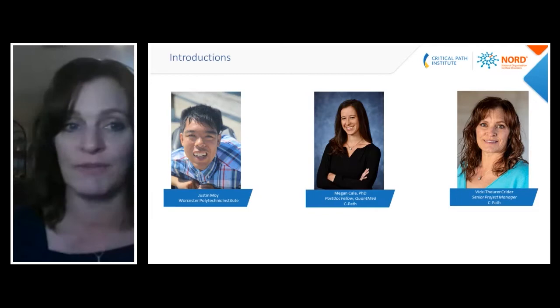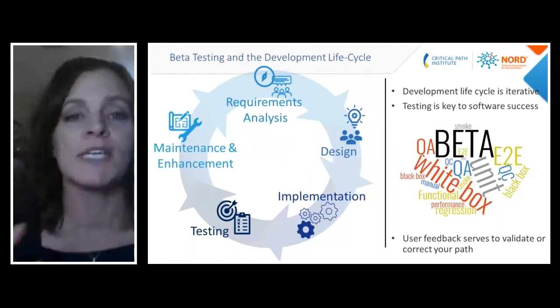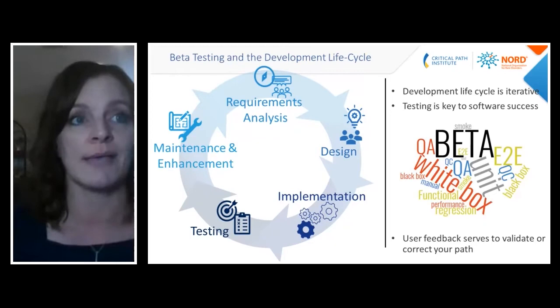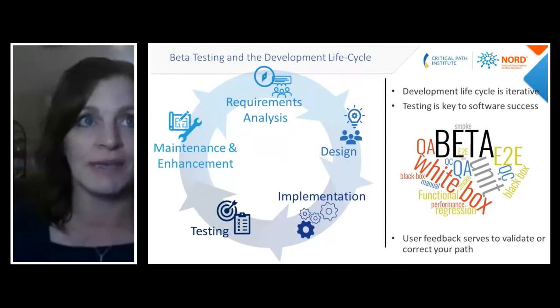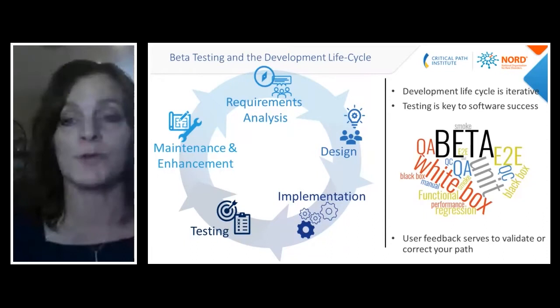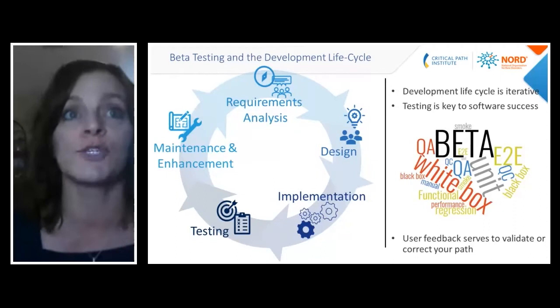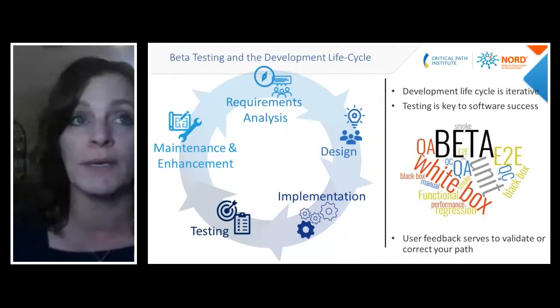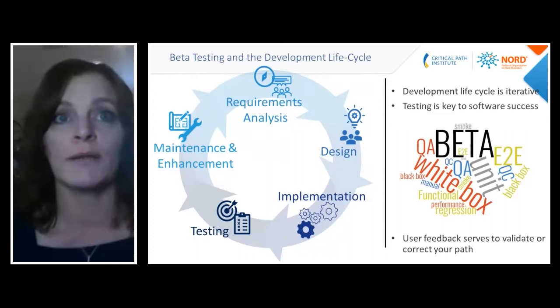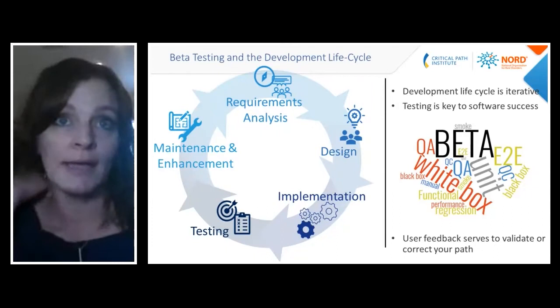I want to spend a moment helping everyone understand, if you don't have experience in software and development, some of the things that go into that particular process. When you have an idea or need to develop a solution, it starts with requirements analysis — surveying your stakeholders, customers, or end users to determine what the software needs to provide, how the solution should look, how it would be used, and what the inputs and outputs need to be. Once you've gathered all of that, you move into a design phase, where you develop architecture for the solution, a framework for what it will look like, and identify hardware and software requirements.